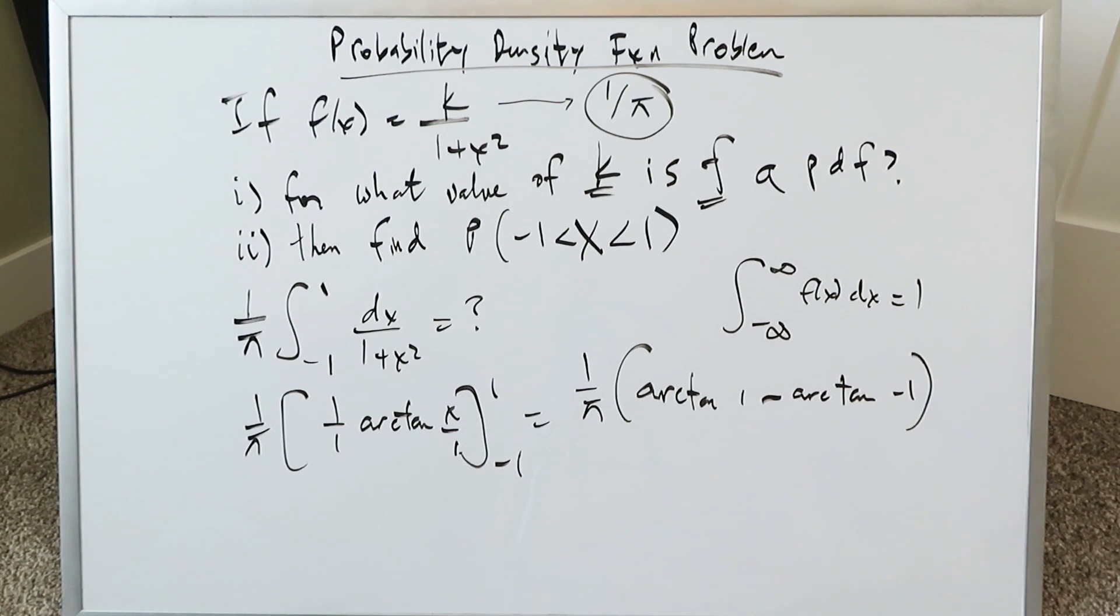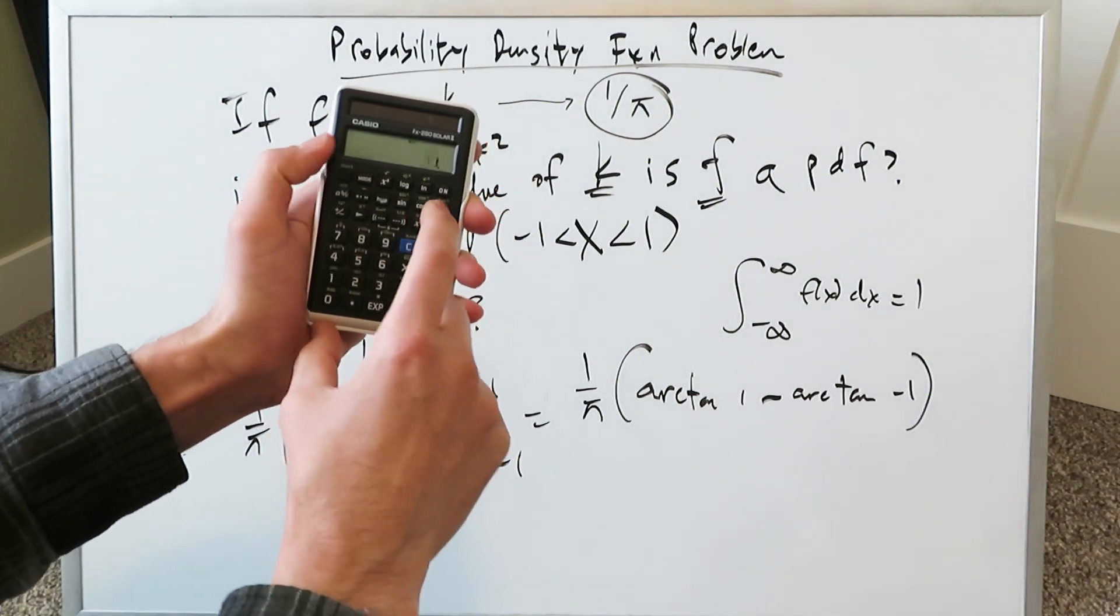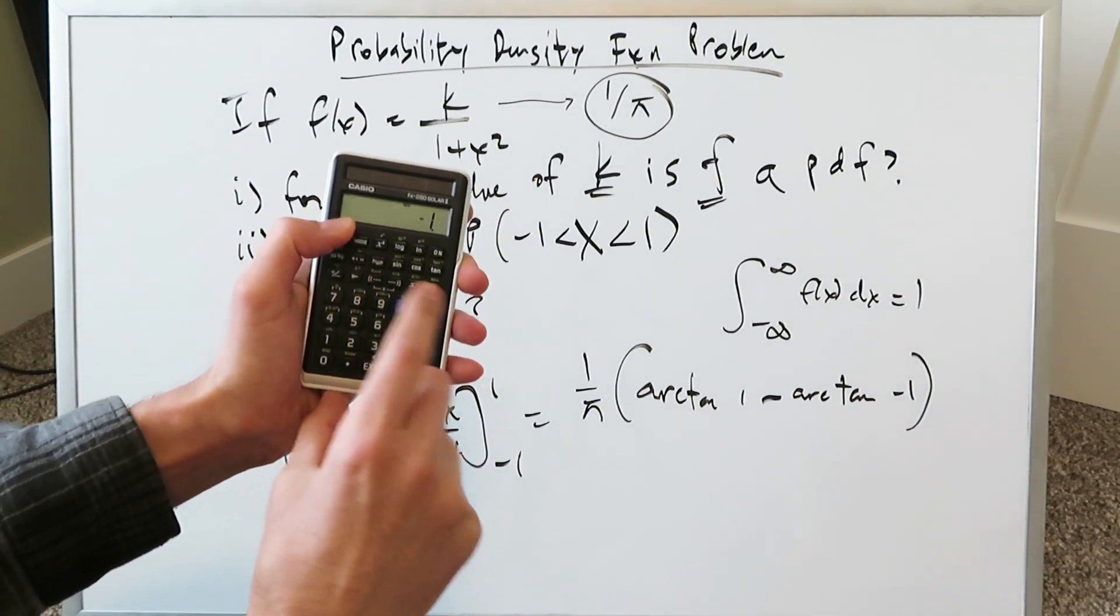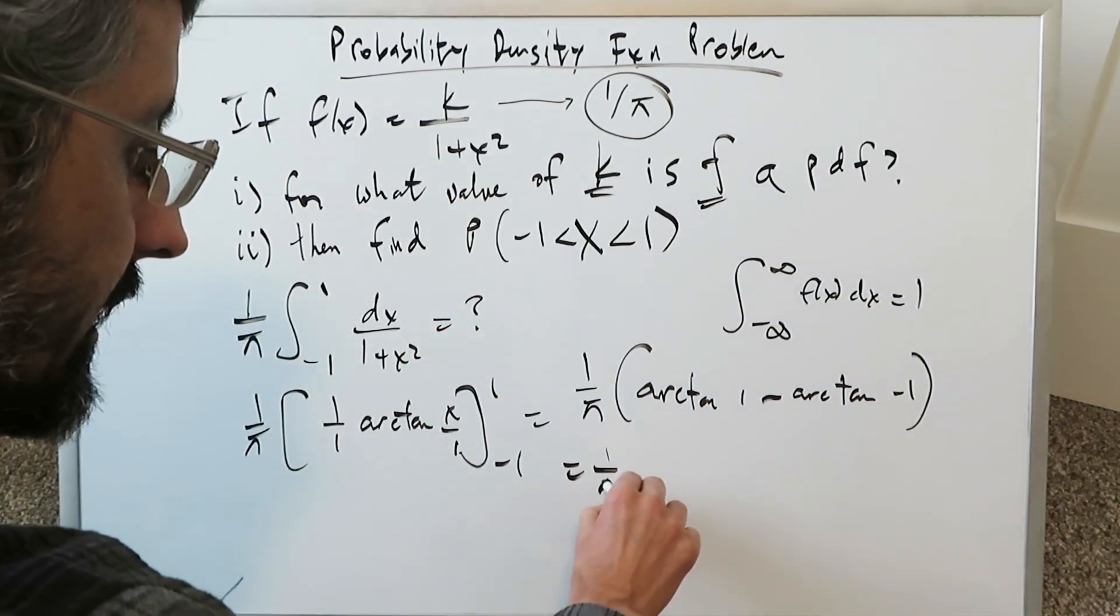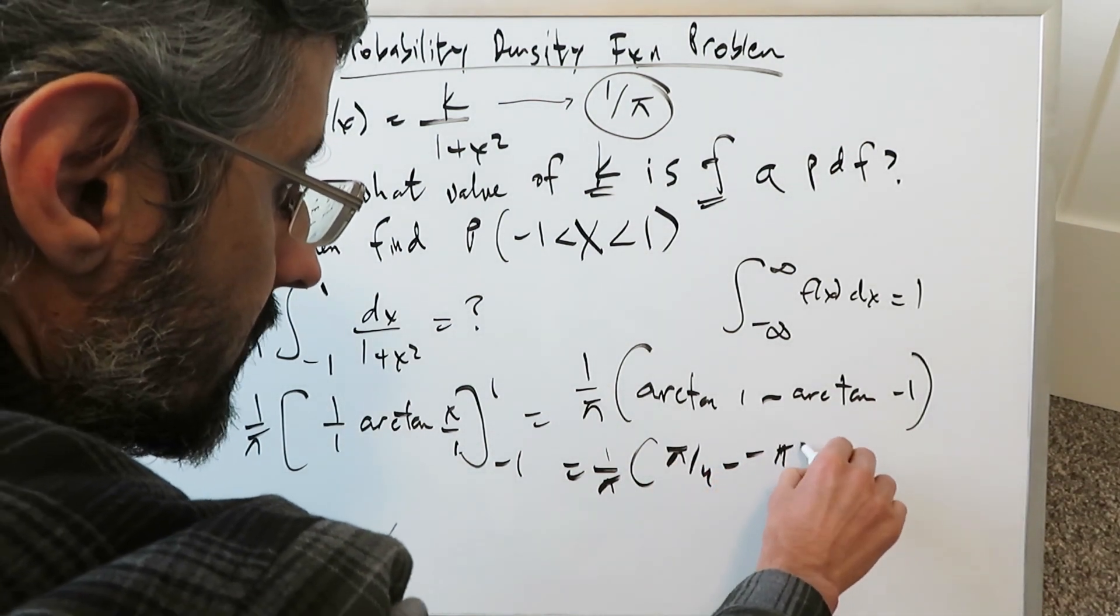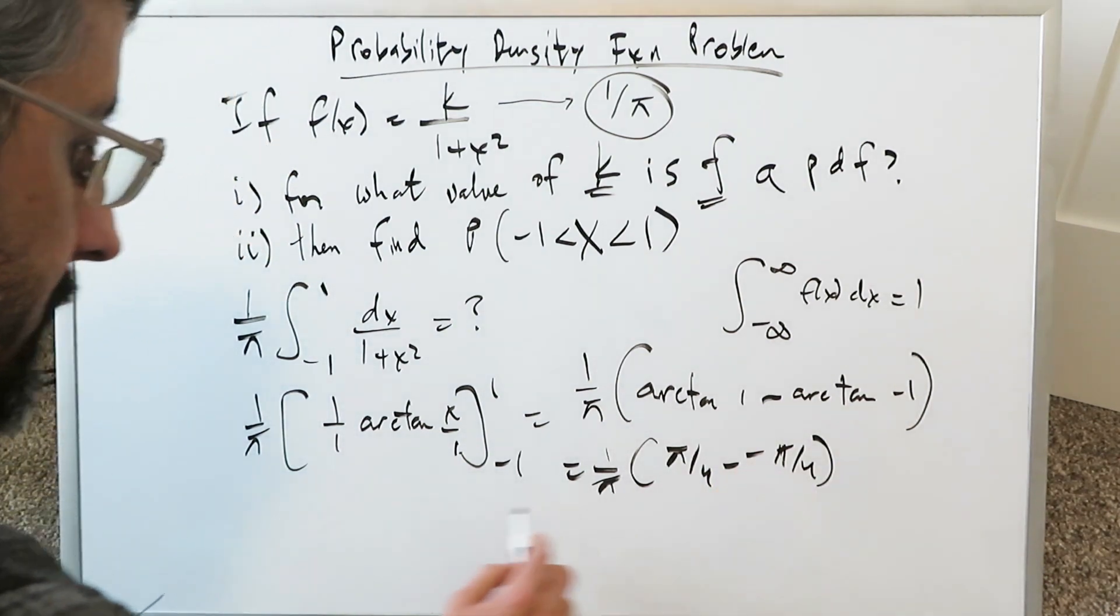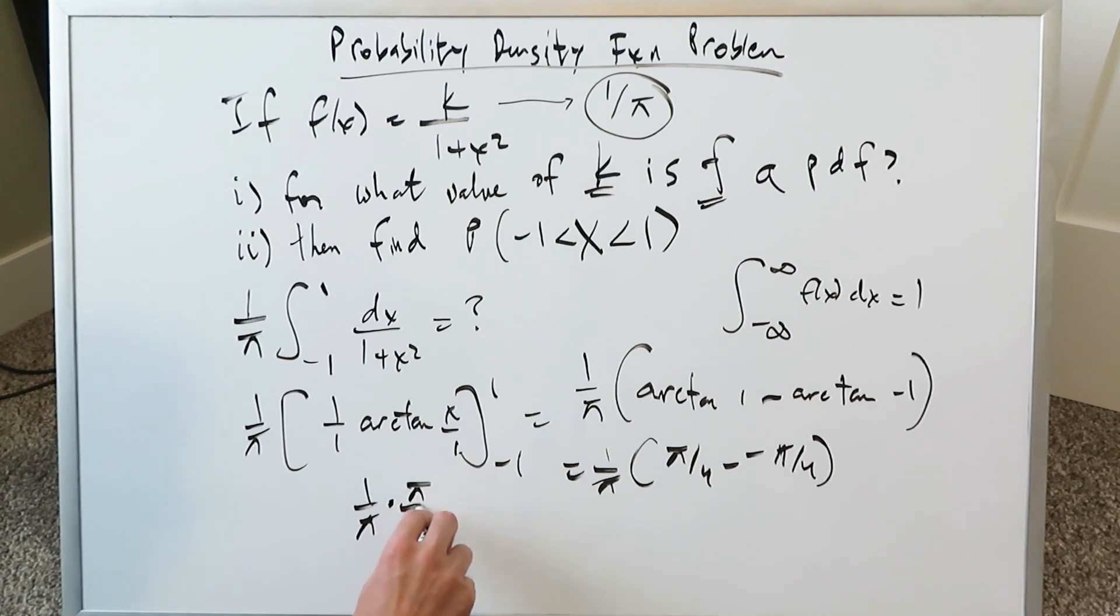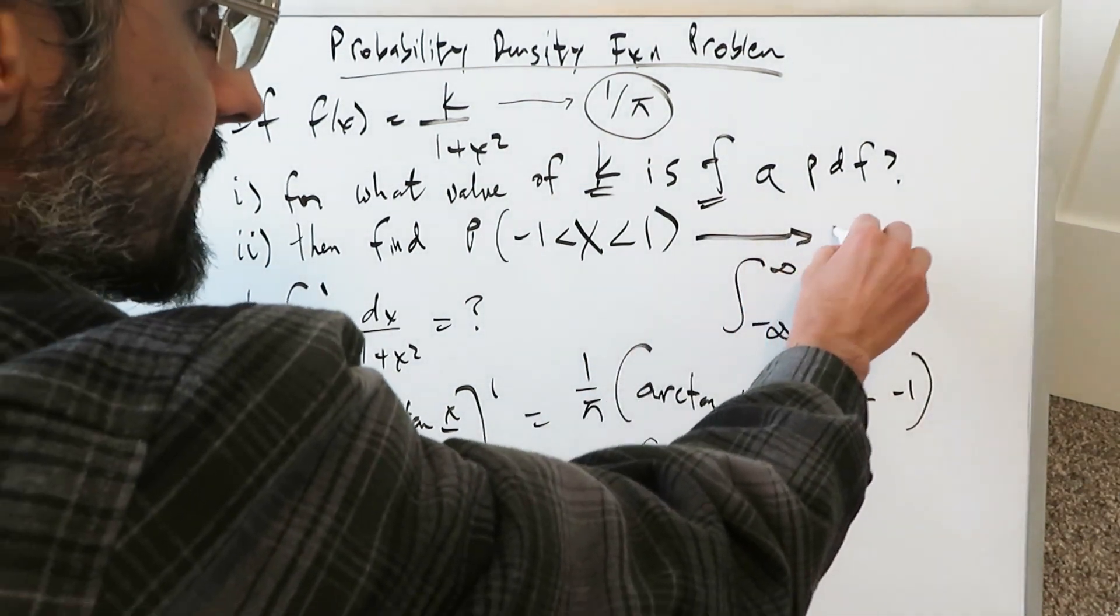And then you're doing 1 over pi times arctan 1 minus arctan minus 1. You know arctan 1 is easy. What angle, if you were to tan it, you'd get a value of 1. It's pi over 4 and the same thing for minus 1. Just do 1 and inverse tan, you'll get pi over 4, 45 degrees. And minus 1, do inverse tan, you get minus pi over 4, minus 45. So you're having 1 over pi times pi over 4 minus minus pi over 4. Minus minus becomes positive, pi over 4 plus pi over 4 is pi over 2. We're looking here at 1 over pi times pi over 2. When you multiply these, the pi's cancel out. You're looking here at 1 over 2. The probability of this specific event over here is 0.5.